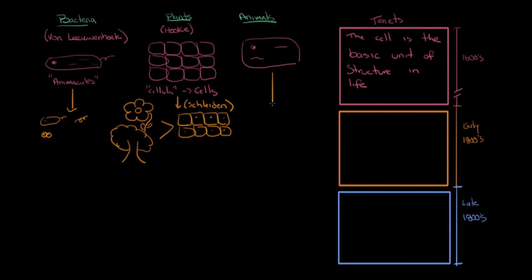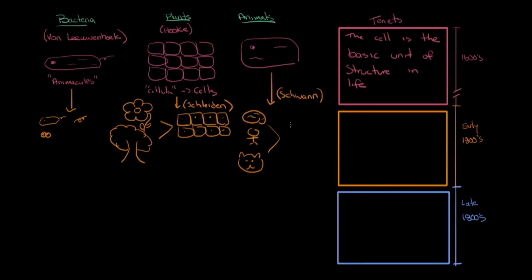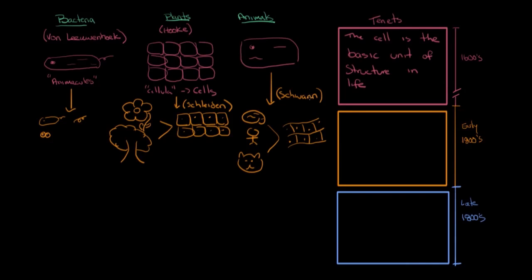At the same time, another German scientist by the name of Theodor Schwann was looking at the nervous systems of different animals. He realized it didn't matter if he was looking at a human or a cat — no matter what type of animal, they all had similar structures that were cells. Luckily, Schleiden and Schwann in 1837 were at a dinner party together and began discussing each other's work. A light bulb went off — if all plants are made of cells and all animals are made of cells, it must be that all living organisms are made of cells. The next year in 1838, Schwann published this finding that all living things are composed of cells.